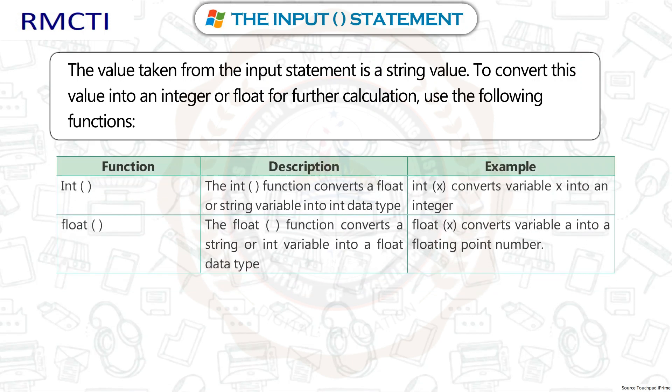To convert the input value into an integer or float for further calculation, use the following functions. The int() function converts a float or string variable into int data type — for example, int(x) converts variable x into an integer. The float() function converts a string or int variable into a float data type — for example, float(x) converts variable x into a floating point number.